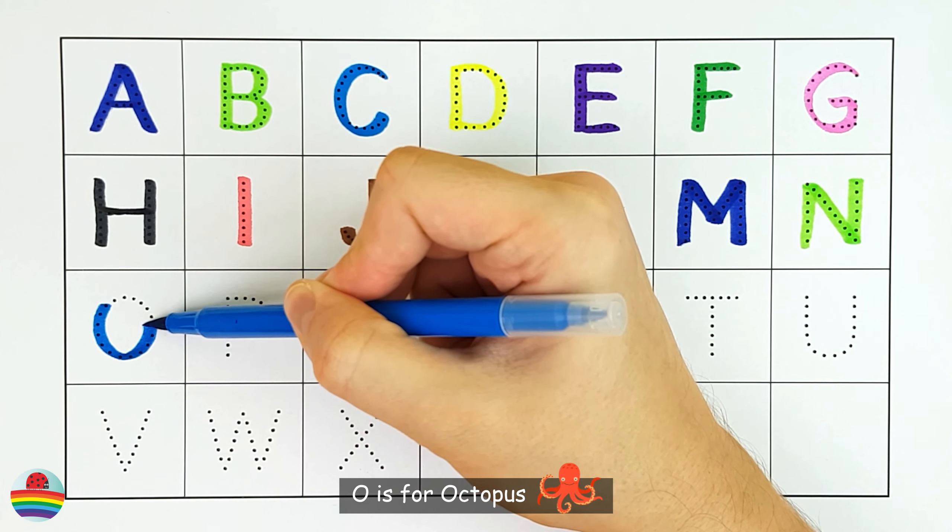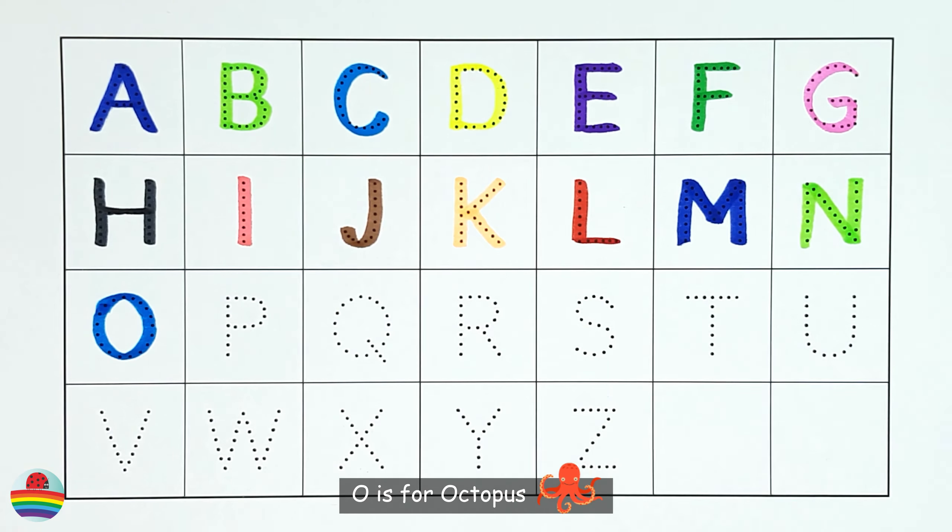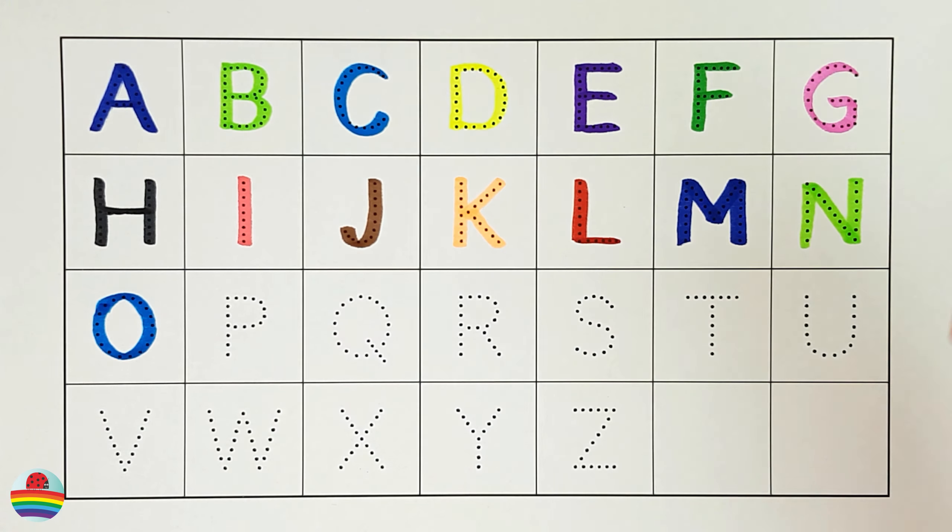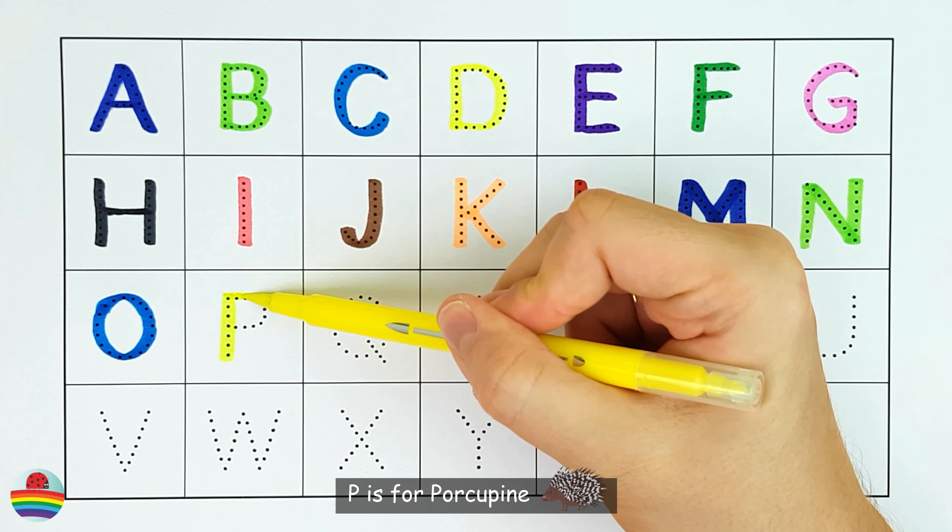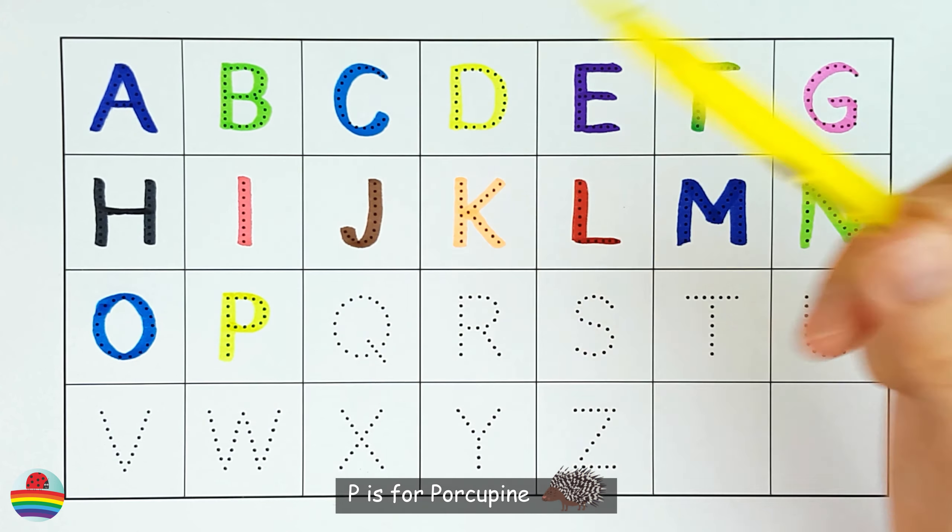O. O is for octopus. O. P. P is for porcupine. P.